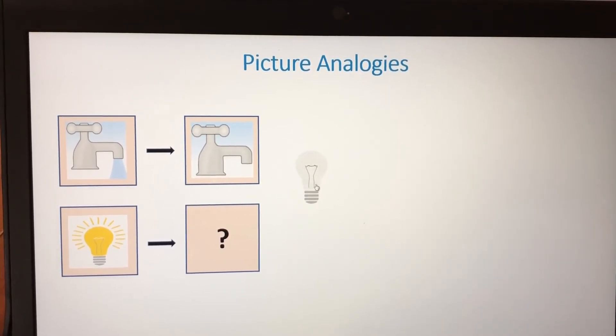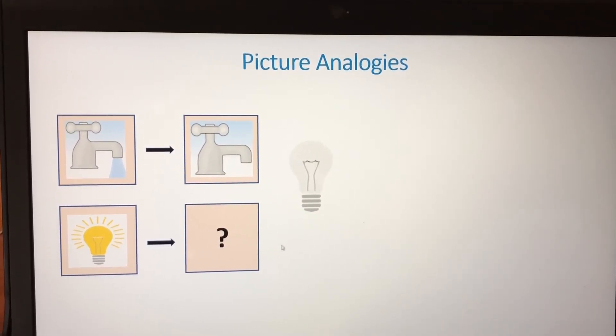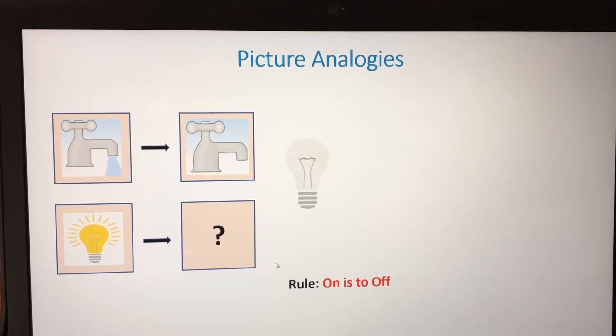The light is off because the rule is on is to off.